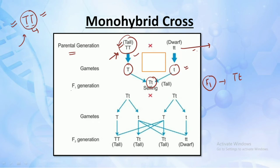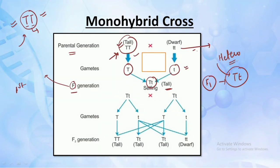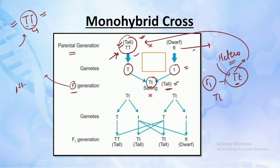As a result of crossing the tall plant and the dwarf plant, we will have capital T and small t as our F1 generation. F1 means the first filial generation. In this generation, we have all plants as tall plants. Even though we have capital T and small t — a heterozygous offspring — the dominant allele represents the tall character. Hence all the offspring would represent capital T, the tall plant.